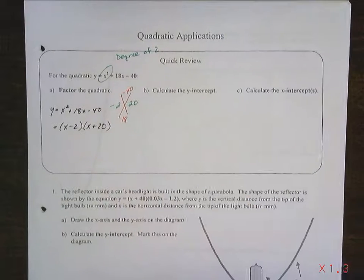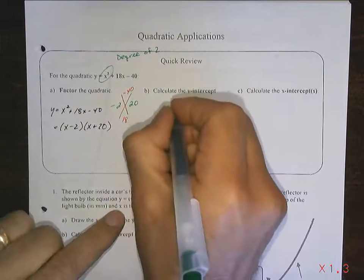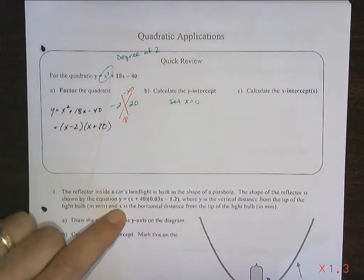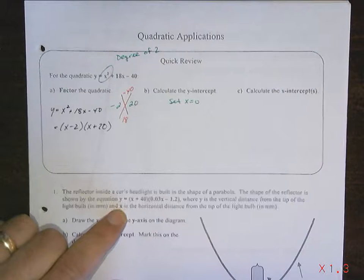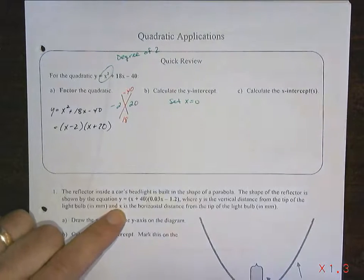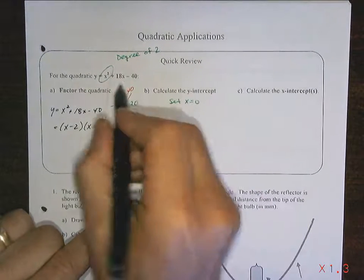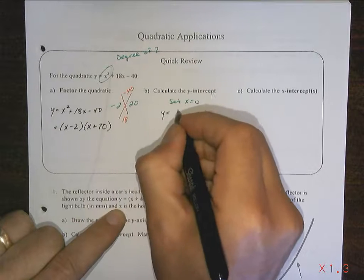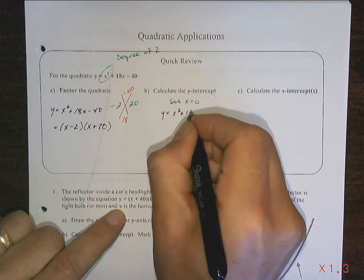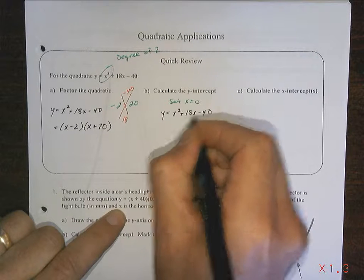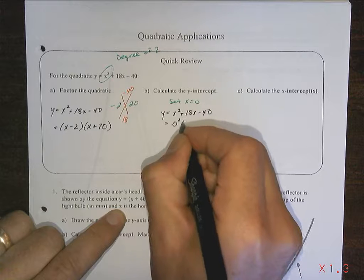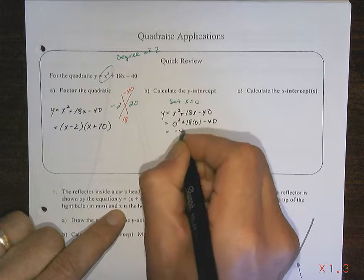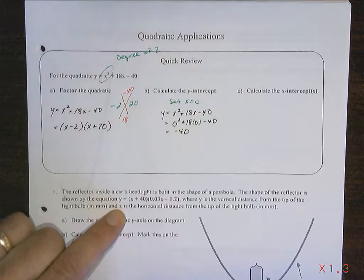Calculate the y-intercept. Well, to calculate the y-intercept, you're going to set x equal to 0. So there's two ways we could do this. Actually, there's three. If I work from the standard form, this is standard form of the equation, then as I set x equal to 0 in standard form, it will look like this, which is negative 40. So the y-intercept is negative 40.